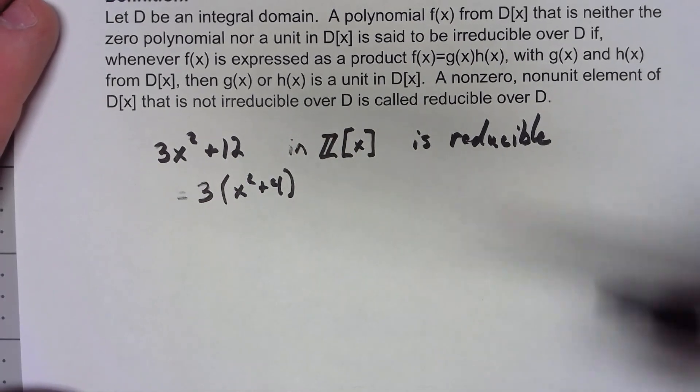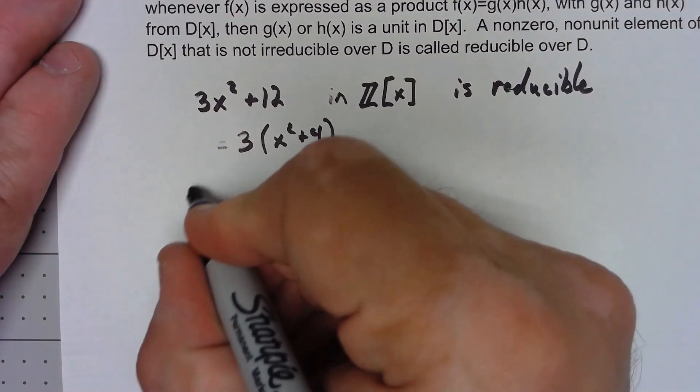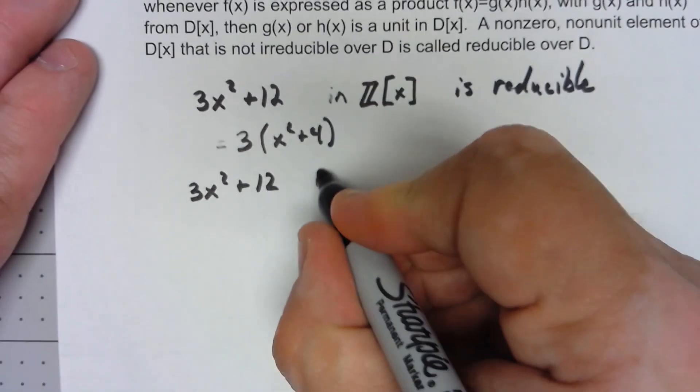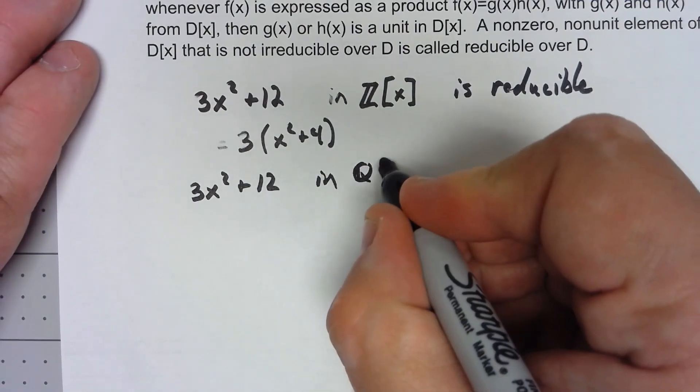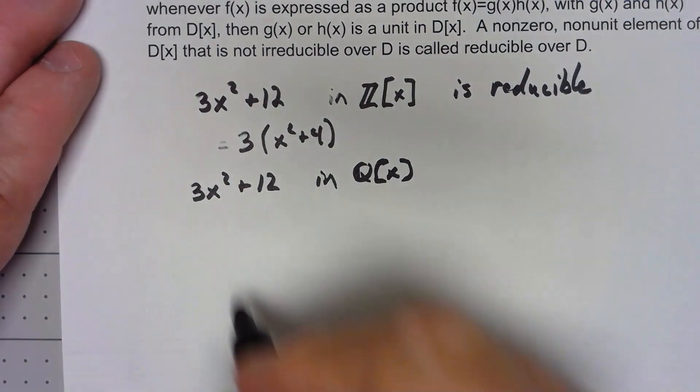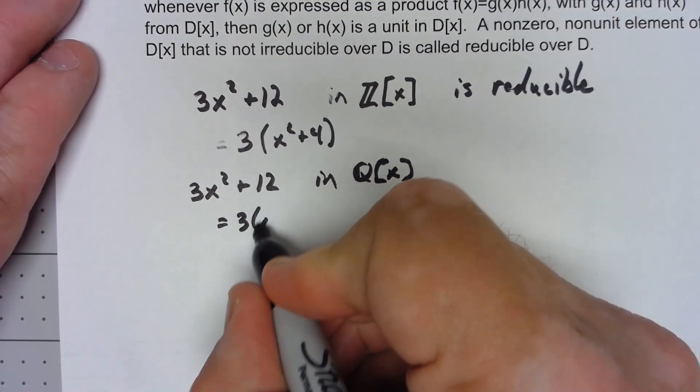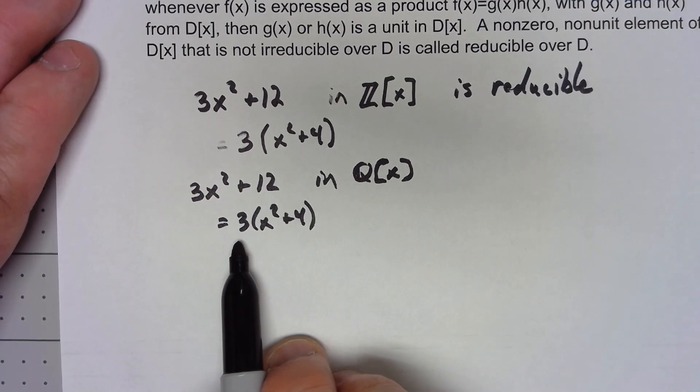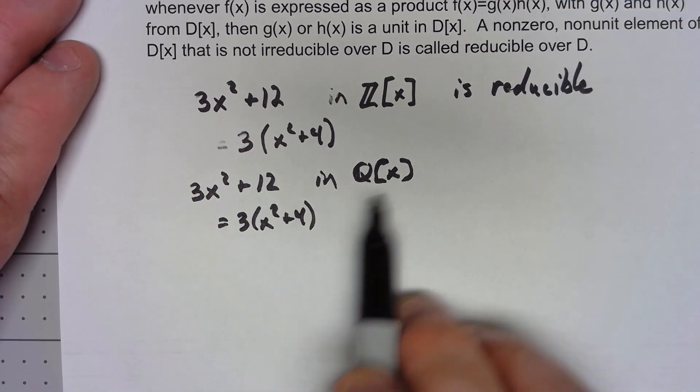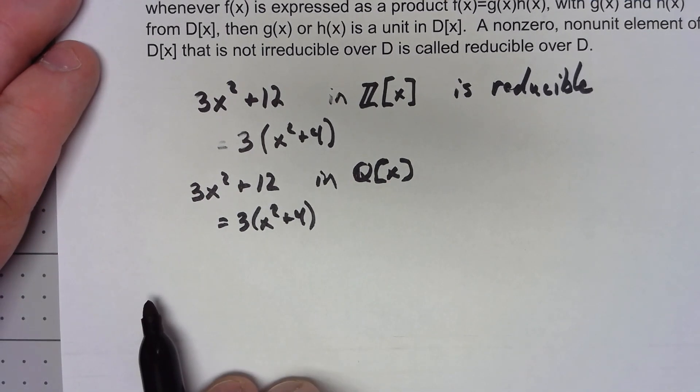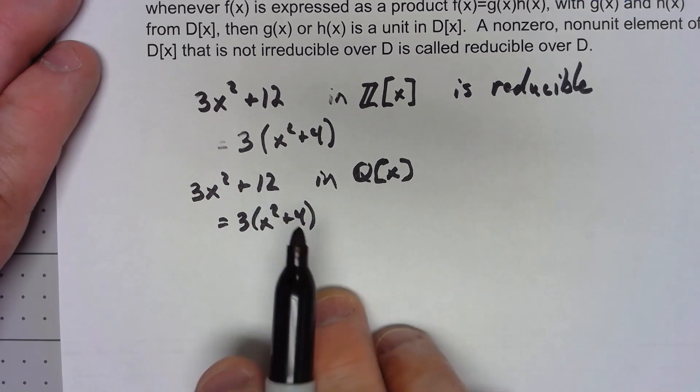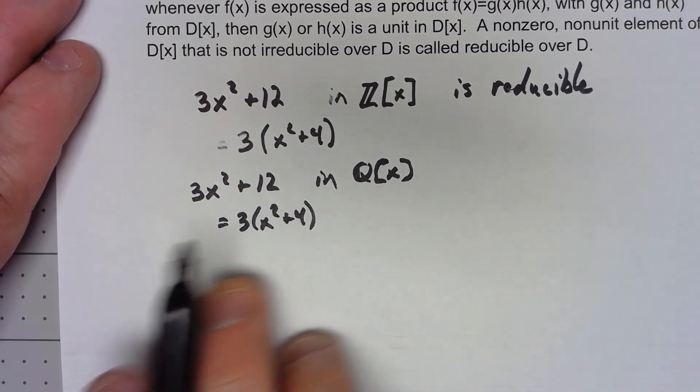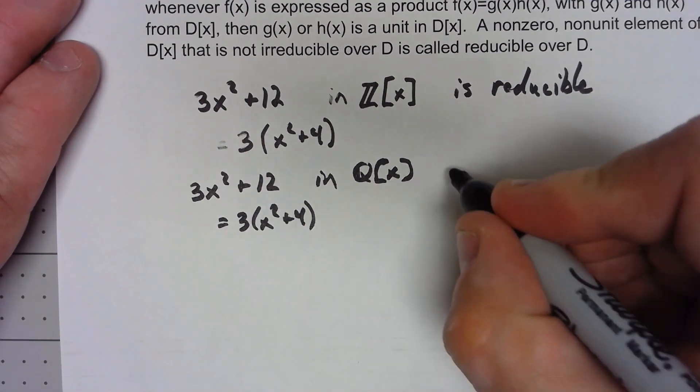However, even though it factors the same way in Q[x], I can still say that's 3 times x squared plus 4 but now 3 is a unit. 3 has a multiplicative inverse in Q[x]. So because that has a multiplicative inverse, this is sort of a trivial way of factoring it in Q[x]. So in this case it's irreducible.